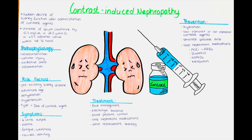Advanced age is associated with an increased risk, as older individuals may have reduced kidney function and are more likely to have comorbidities contributing to contrast-induced nephropathy. Dehydration reduces blood flow to the kidneys and can exacerbate the toxic effects of contrast agents, increasing the risk. High blood pressure can also lead to decreased kidney perfusion and impair the kidney's ability to handle contrast agents.